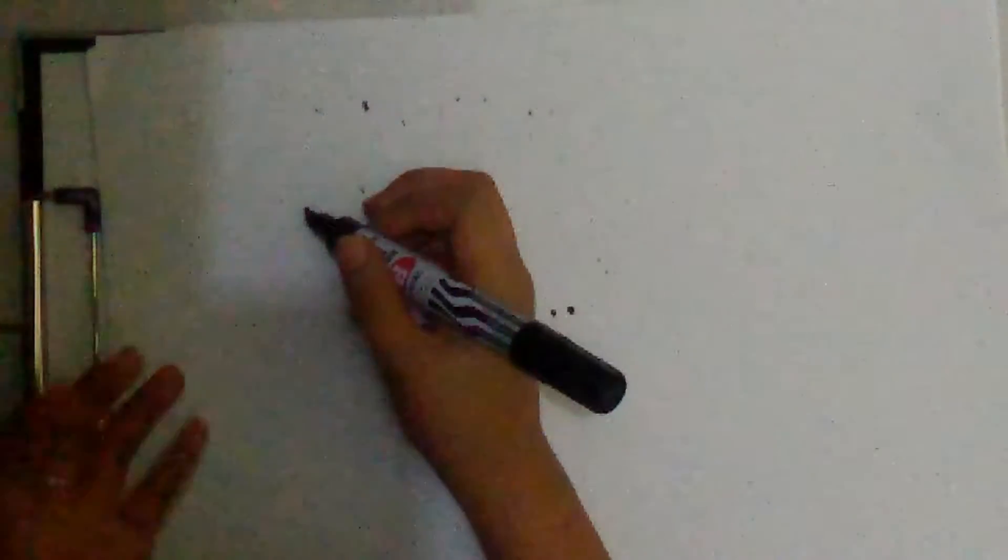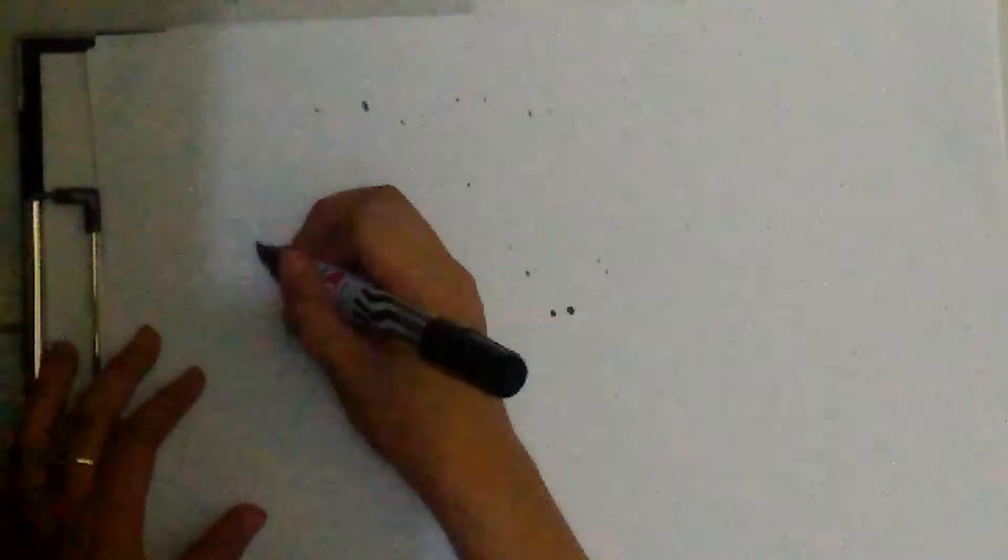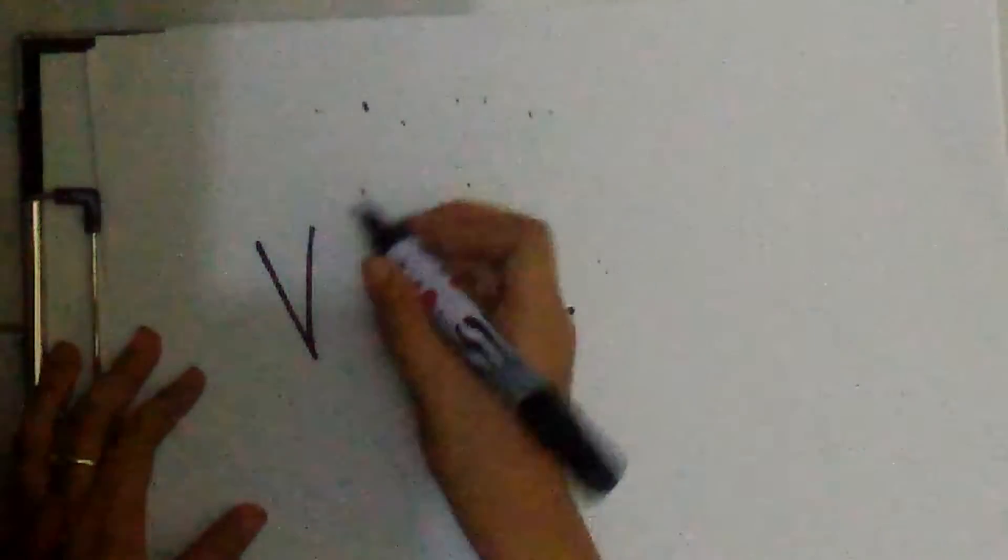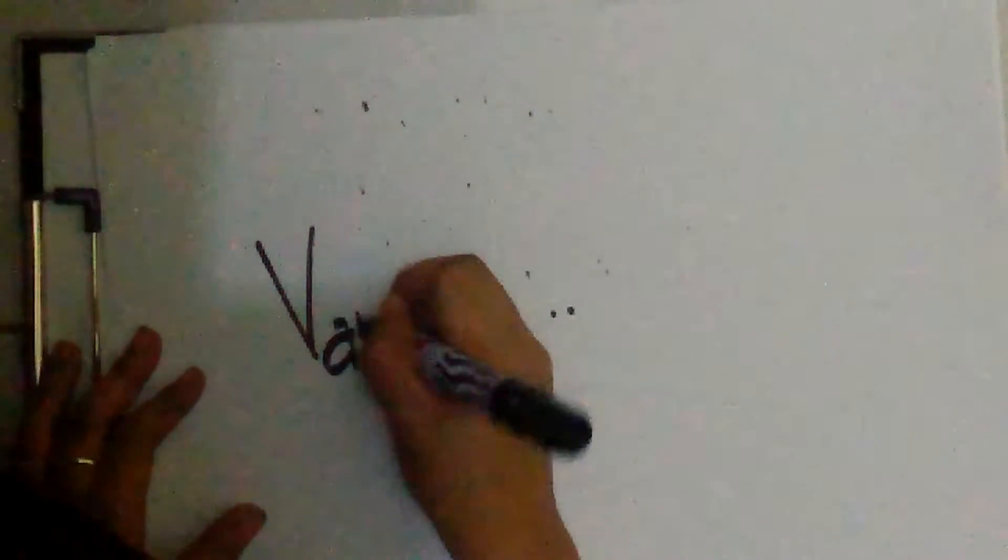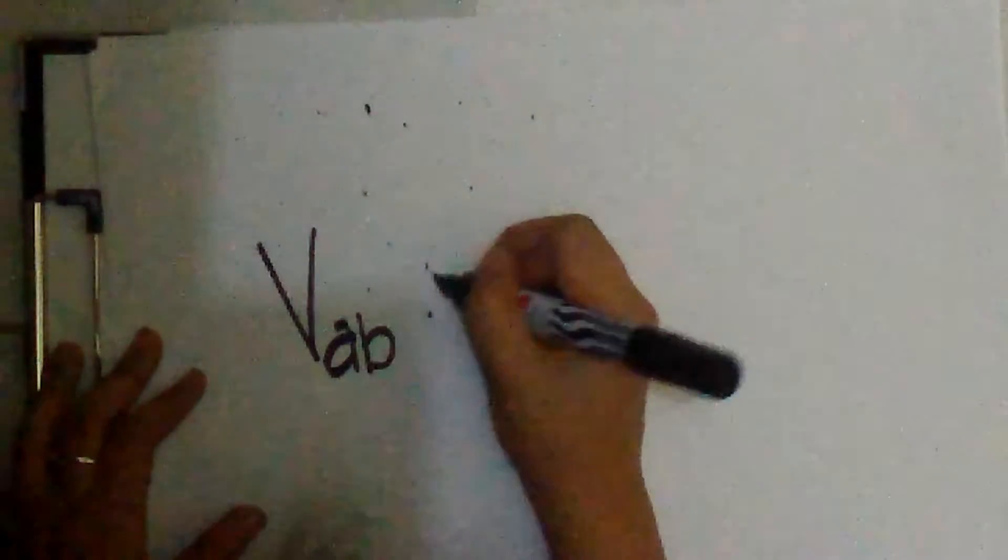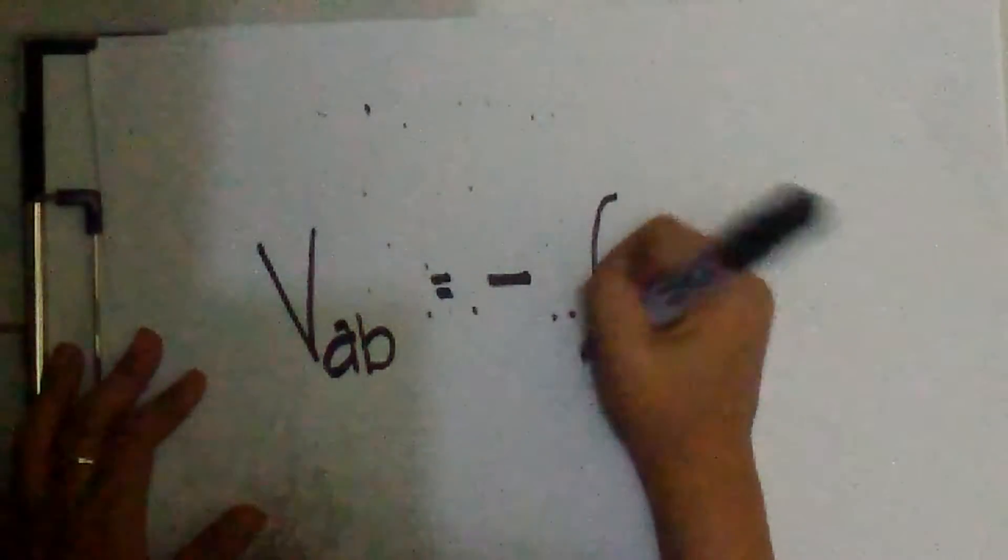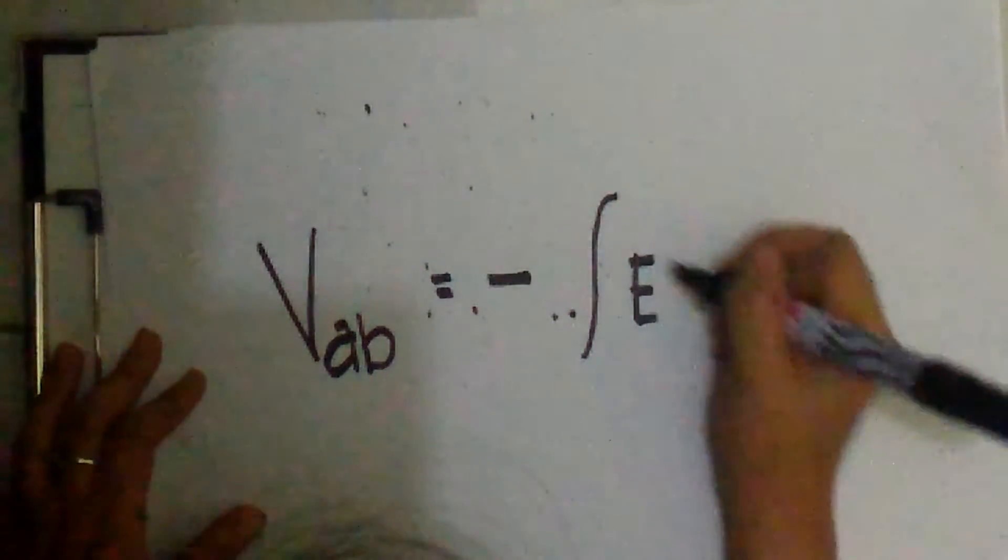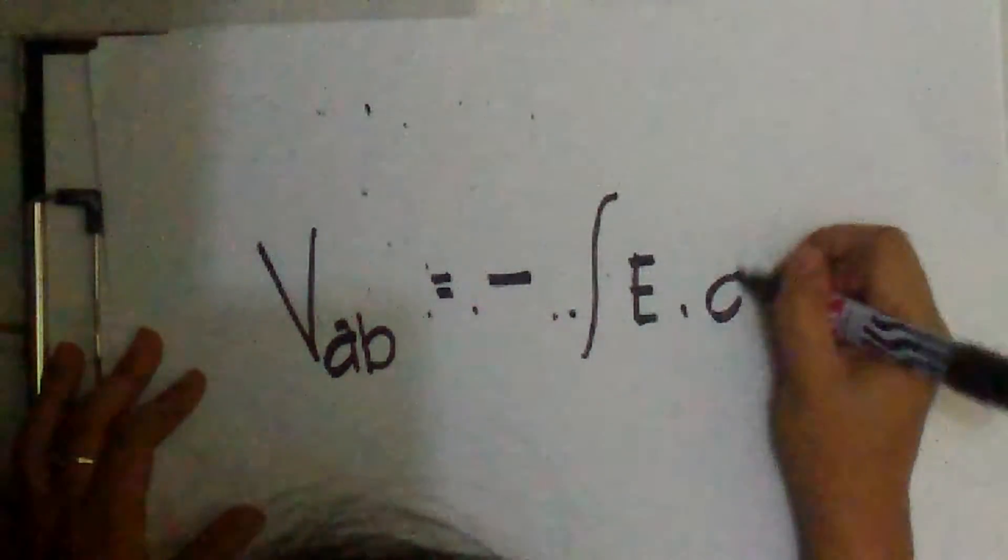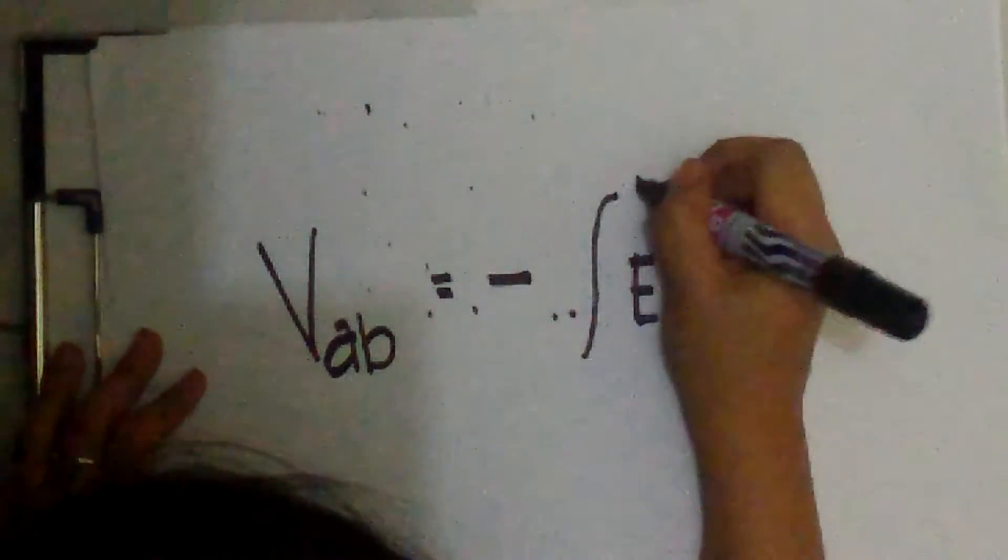Therefore, the line integral is equal to VAB is equal to negative integral E dot product dL limit AB.